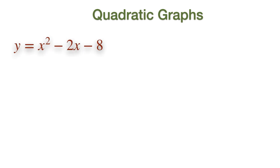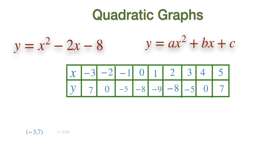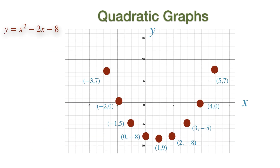Here is another example. Y equals to X squared minus 3X minus 8 is of the form Y equals to AX squared plus BX plus C. We can choose some negative and some positive X values and calculate the corresponding Y values. From the table of values, X varies from minus 3 to 5 and Y varies from minus 9 to 7. This should help us plan the length of the X and Y axis.